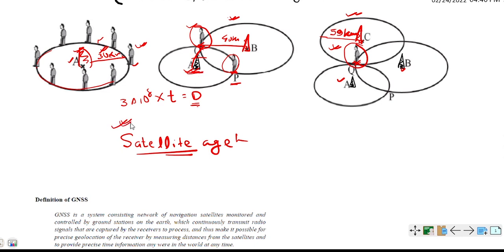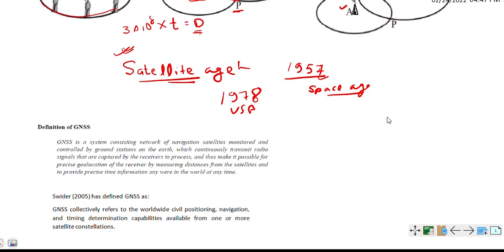In 1957, Russia launched their first satellite and from that the Space Age journey started. And in 1978, USA launched their full satellite navigation satellite constellation, that is NAVSTAR GPS. We shall know about this later in other videos. Now let us see the definition of GNSS.